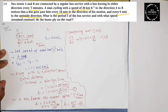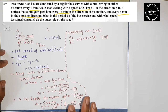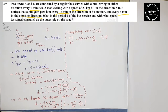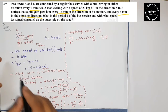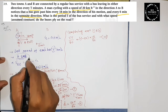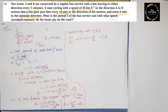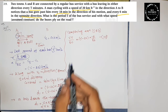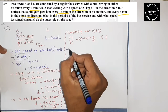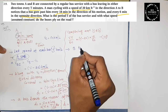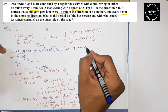Equation 3 is for A to B. Now let's look at the opposite direction, from B to A. The cycle continues traveling in the A to B direction, but now the bus comes from B to A, which is opposite to the cyclist's direction.